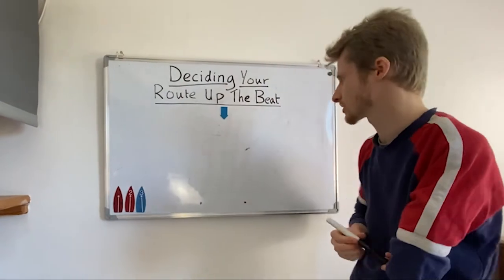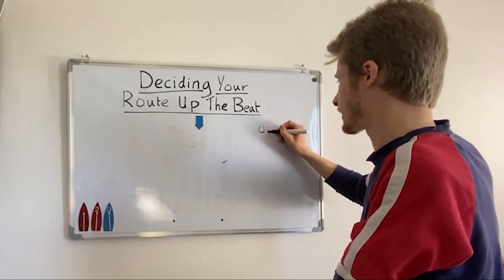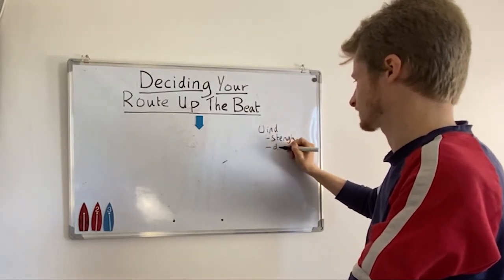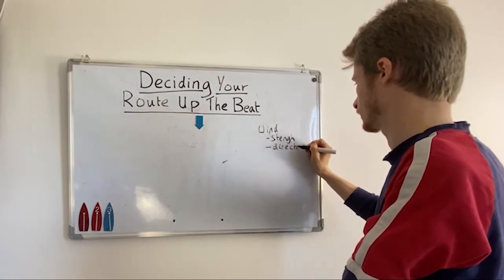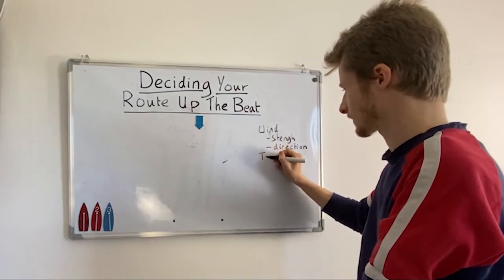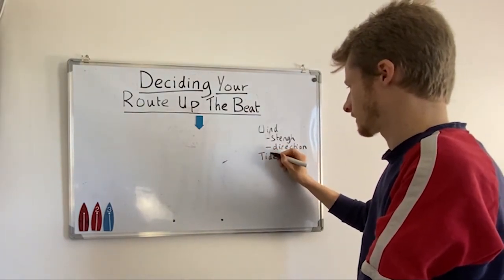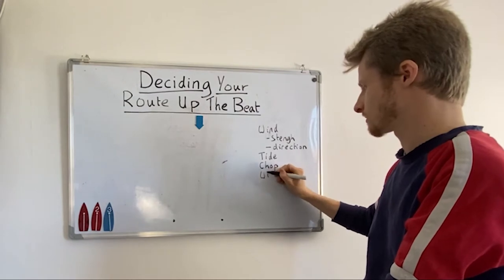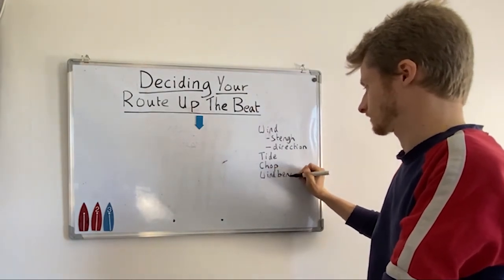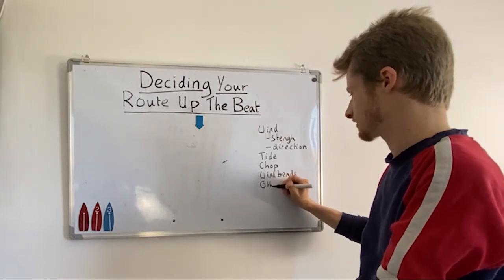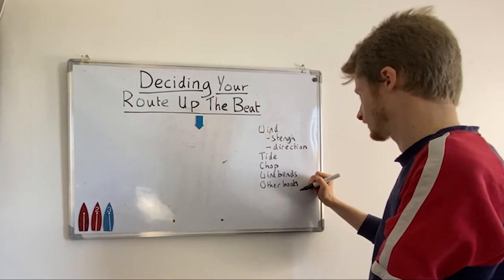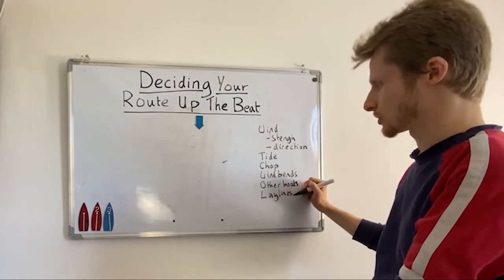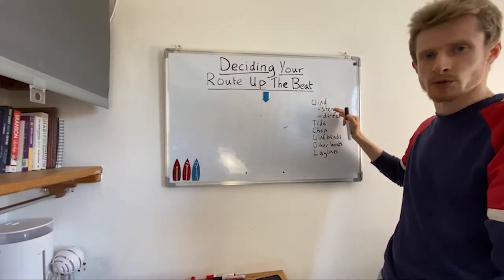Which side we choose can be influenced by several factors such as wind strength and direction, tide — again strength and direction — wind bends, other boats, and lay lines. We don't want to be going out to the lay lines unless there's a really good reason to do so. Before the start you want to be taking into account all these factors.